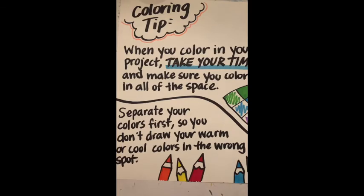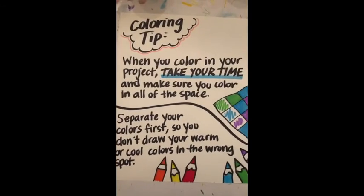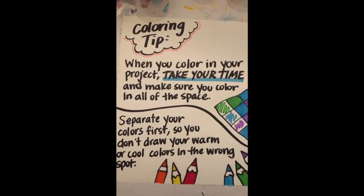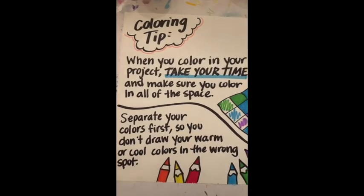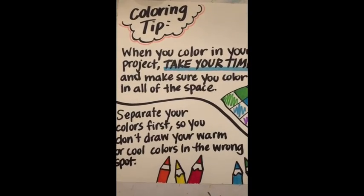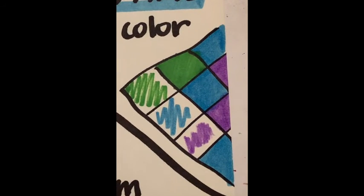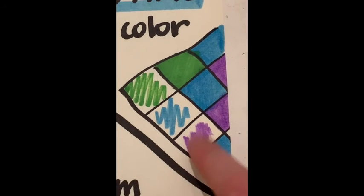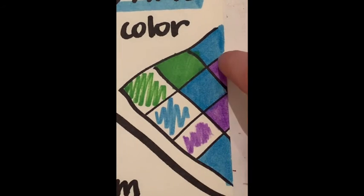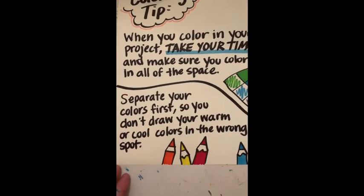I have some coloring tips for you. When you color in your project, take your time and make sure you color in all of the space. I put a little example over here. Your project is going to have a much more finished look if you color in your whole shape. Sometimes I make a mistake and draw cool on the inside or warm on the outside.